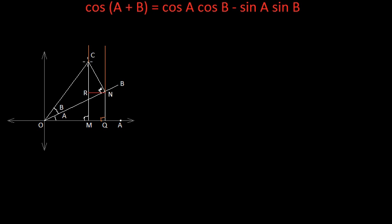And then from point C, I have drawn a perpendicular CN on line OB. Then I have drawn a perpendicular from point C to line OA and CM is the perpendicular, and NQ is a perpendicular from point N to line OA. And then I have drawn a perpendicular NR on line CM.